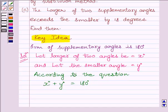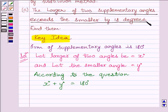Condition given to us in the question is that the larger of the two supplementary angles exceeds the smaller by 18 degrees. This implies the difference between the two angles is equal to 18 degrees. So, we can write x minus y is equal to 18 degrees.